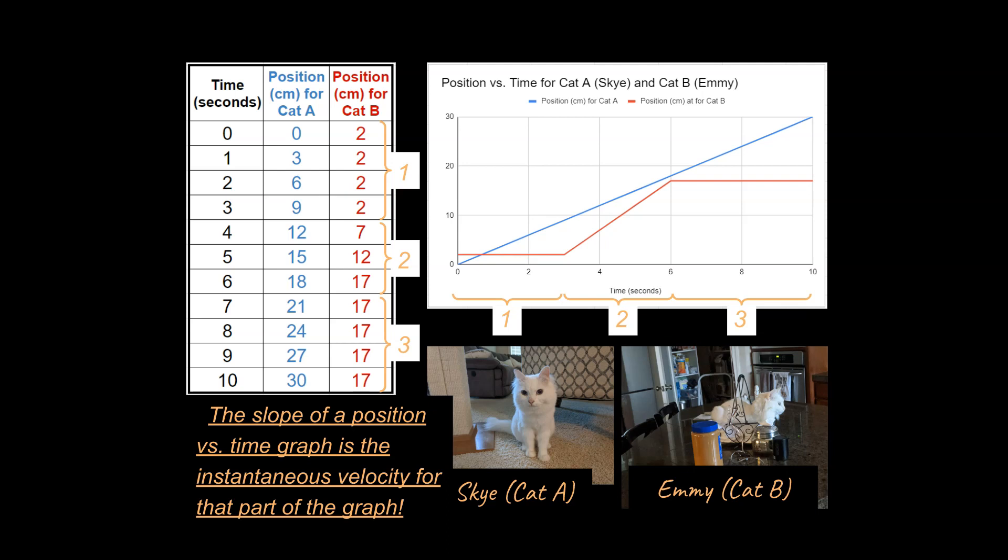So you could say, what's the velocity at two seconds? Well, that's going to be zero for Emmy. What's the velocity at eight seconds for Emmy? That is zero. Nine seconds, zero. Ten seconds, that's zero. And you could say, well, what is the velocity here? Well, to solve for the velocity at any point during this time right here, you would just have to solve for the slope of this line, and that would be the velocity at any instantaneous point throughout this line right here.